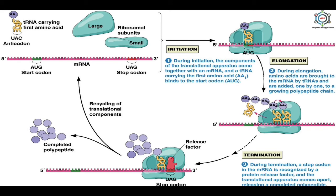In summary, protein synthesis involves three stages. During initiation, the components of the translation apparatus come together, with a tRNA carrying the first amino acid binding to the start codon. During elongation, amino acids are brought to the mRNA by tRNA and added one by one to a growing polypeptide chain. During termination, a stop codon in the mRNA is recognized by a protein release factor and the translational apparatus comes apart, releasing a completed polypeptide.